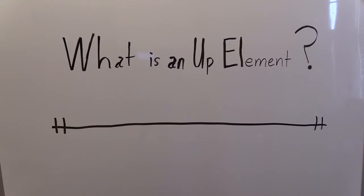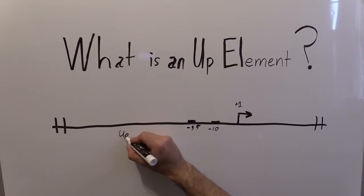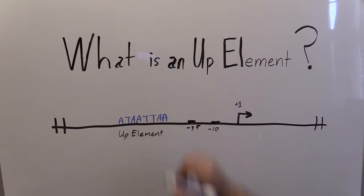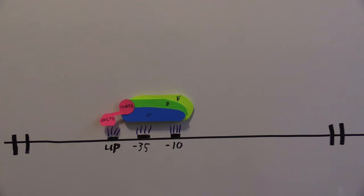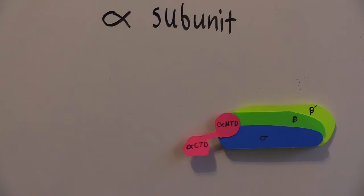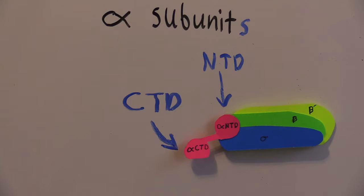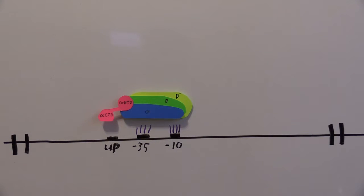So what is an UP element? We're still going to have a negative 10 and negative 35 site upstream of the plus one. We're also going to have an AT-rich region between the negative 40 and negative 60 sites — that is the UP element. The UP element interacts with the alpha subunit of RNA polymerase, specifically the C-terminal domain. With an UP element, there's a third place for RNA polymerase to bind. Having three binding sites over two increases the likelihood that RNA polymerase would bind and transcription would occur.